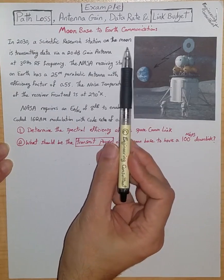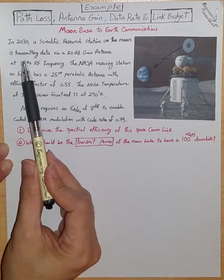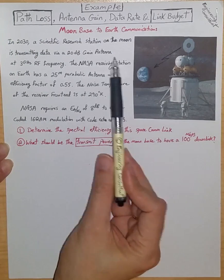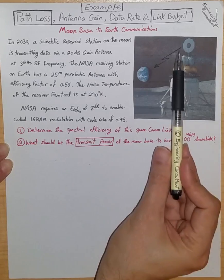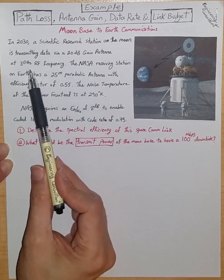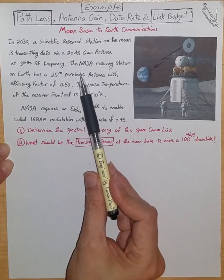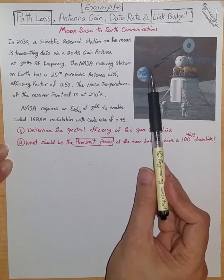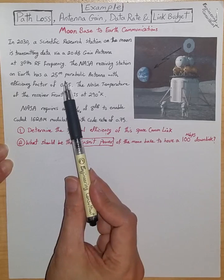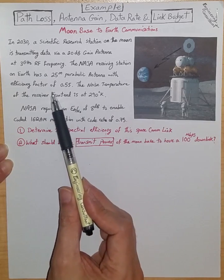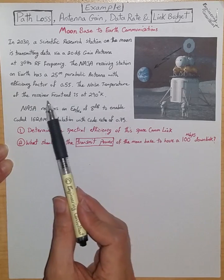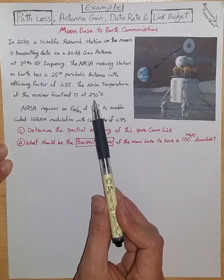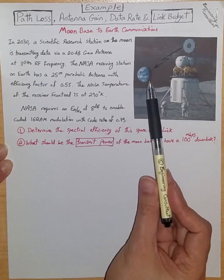Moon-based to Earth communication scenario. In 2030, a scientific research station on the moon is transmitting data via a 20 dB gain antenna at 3 GHz frequency. The NASA receiving station on Earth has a 25-meter parabolic antenna with efficiency factor of 0.55. The noise temperature of the receiver front end is at 290 degrees Kelvin.